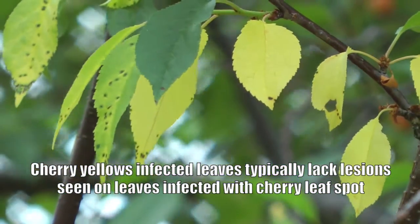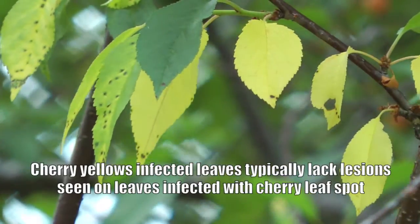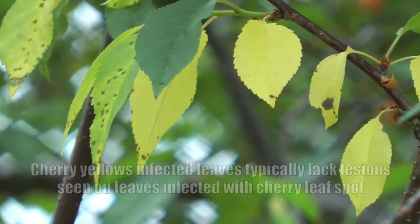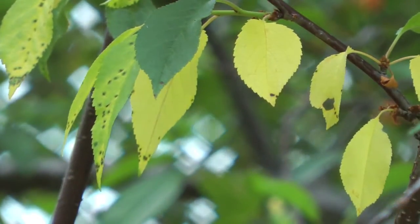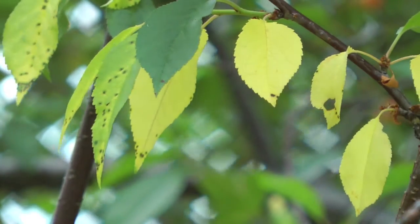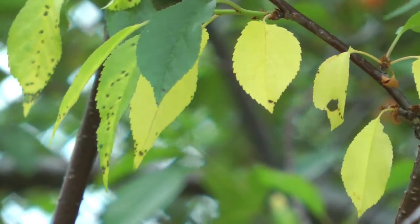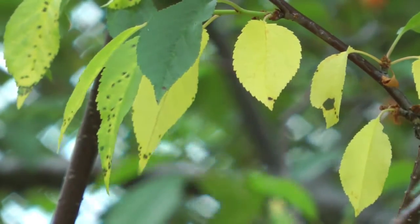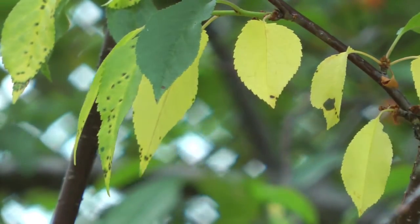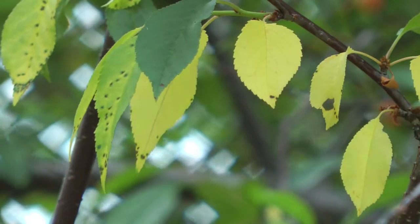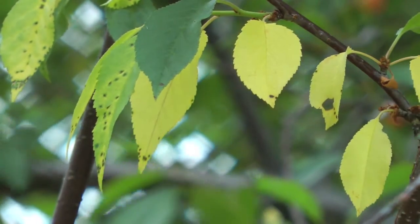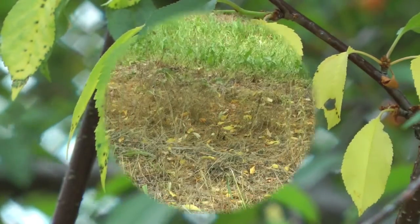Also, when we see cherry yellows, it usually only occurs in a branch or a couple of branches on individual trees — it's fairly sporadic in occurrence. However, both cherry yellows and leaf spot are significant defoliators of tart cherry trees.